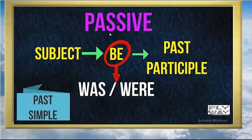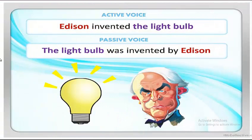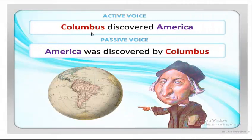When changing sentences to passive in the past, we start with the object, followed by 'was' or 'were,' then the past participle. For example: 'Edison invented the light bulb' becomes 'The light bulb was invented by Edison' — 'the light bulb' is singular so we use 'was.' 'Columbus discovered America' becomes 'America was discovered by Columbus.'